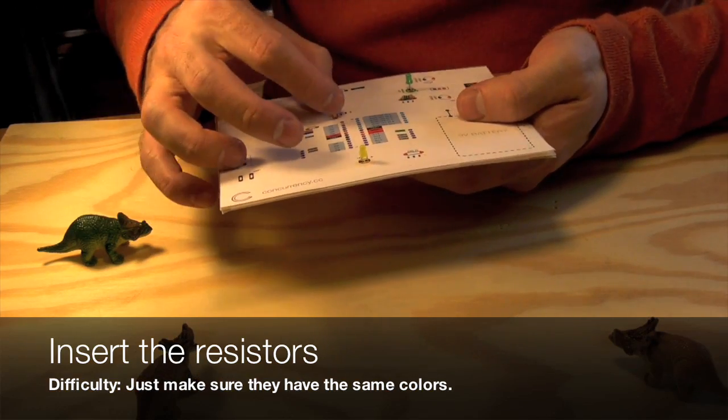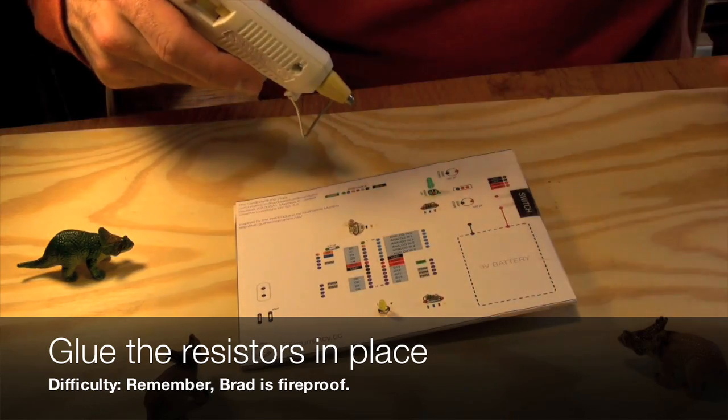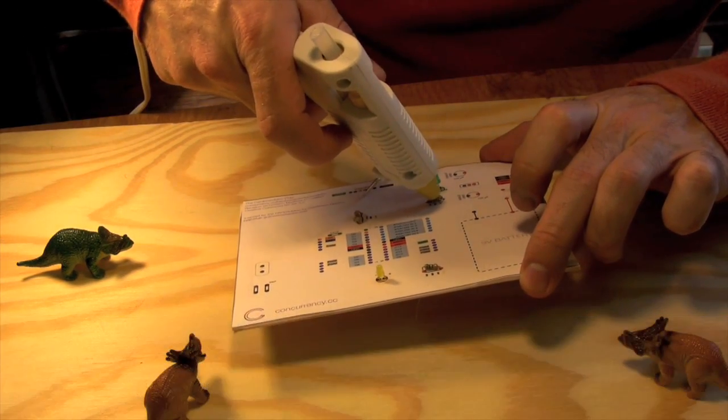There is no positive or negative to resistors. All you have to do is make sure you get the right ones in the right places and then glue them down. Once again, bend the legs over on the back so that you can solder things to them later.